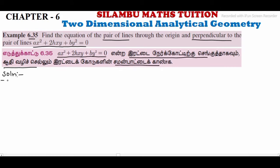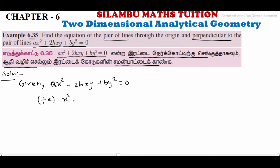The equation is ax² plus 2hxy plus by² is equal to 0. The x² coefficient — we won't change it as usual — so dividing by a on both sides, we get x² plus 2h divided by a into xy plus b divided by a into y² is equal to 0. Let us assume this as equation 1.